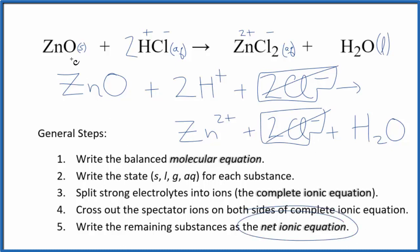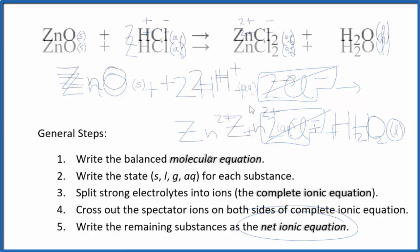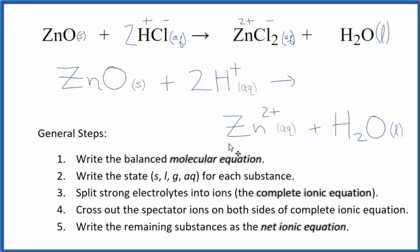Let me clean this up and write the states in and we'll have our net ionic equation. So this is our balanced net ionic equation for zinc oxide plus hydrochloric acid.